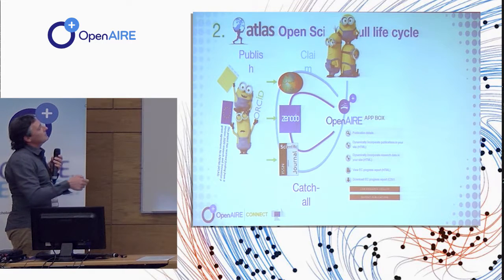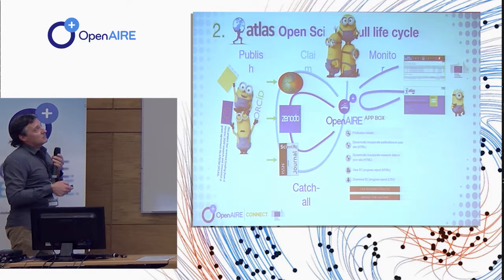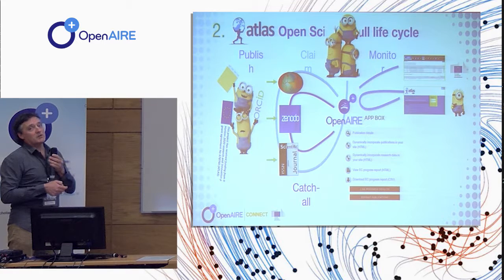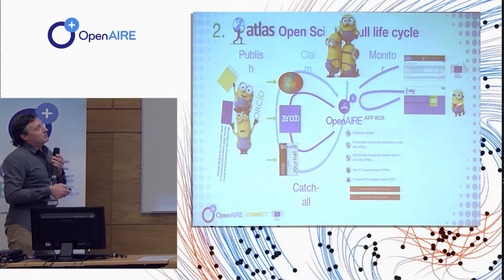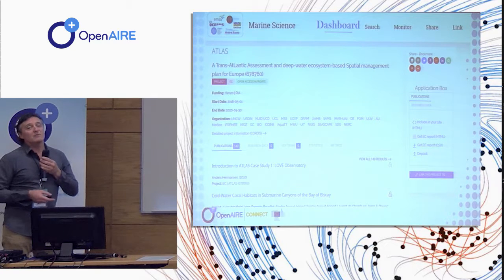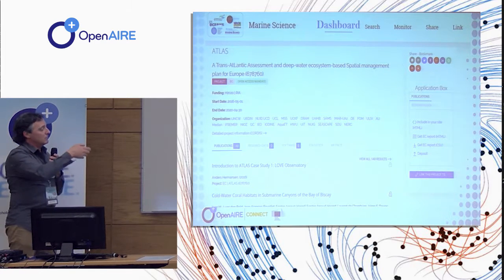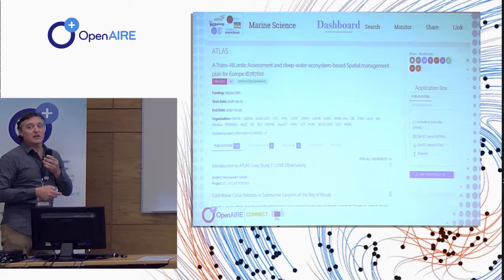Based on that catch-all approach, we use the AppBox claim function — scientists are doing this in ATLAS — as well as the monitoring functions where all outputs are automatically reported to the EC, which simplifies our reporting procedure in the project. We also claim outputs to display them on our website. These are the benefits we get from the program. In the dashboard for the marine science community, each project has its own page, which is one way to bring attention to a project's outputs.